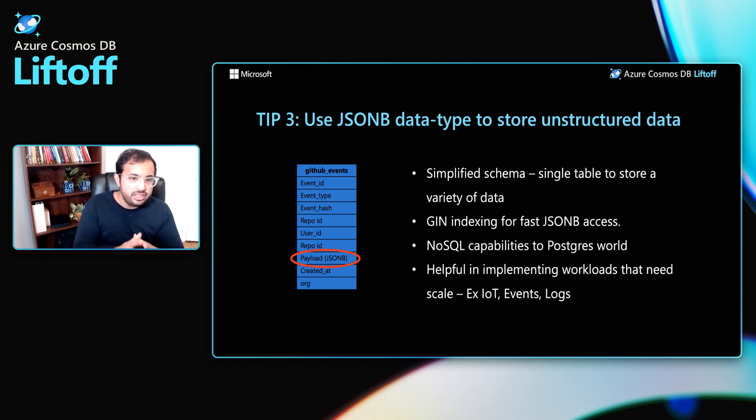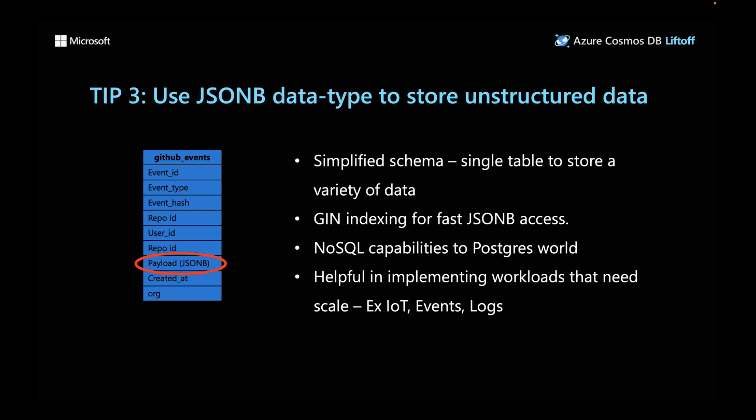Tip three: use the JSONB data type to store unstructured data. Azure Cosmos DB for Postgres natively supports JSONB, helping you store semi-structured and unstructured data. The advantages include a simplified schema — you can use a single table to store a variety of data. For example, with GitHub events data, the payload JSONB column lets you store a variety of event types in a single table. JSONB also supports GIN indexing for fast access and efficient querying. This adds NoSQL and document-like capabilities within a distributed Postgres world, working well for IoT, events, and logs workloads.